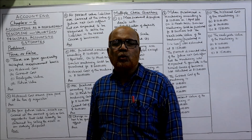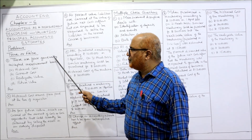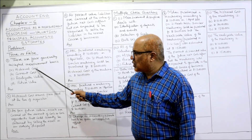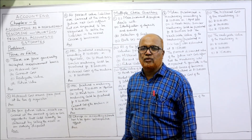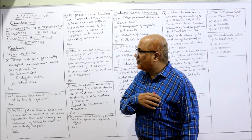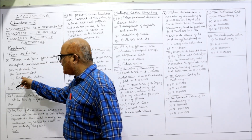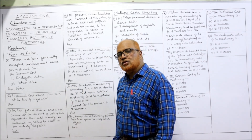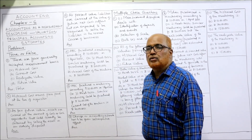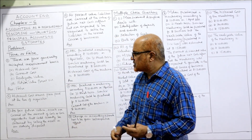The first problems are true and false. We have to identify which item is true. True or false: there are four generally accepted measurement bases. The four listed are: historical cost, current cost, realizable value, and future value. Future value is NOT one of the generally accepted measurement bases — it is present value. So this statement is false. The first three are correct, but future value is not a measurement basis; present value is.